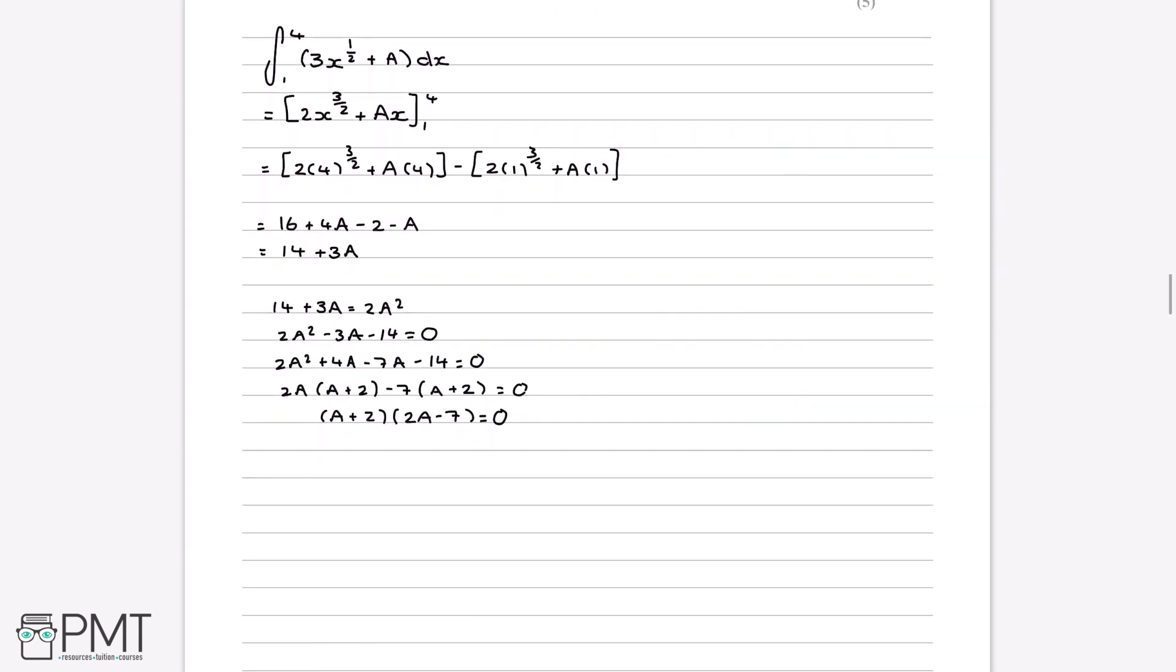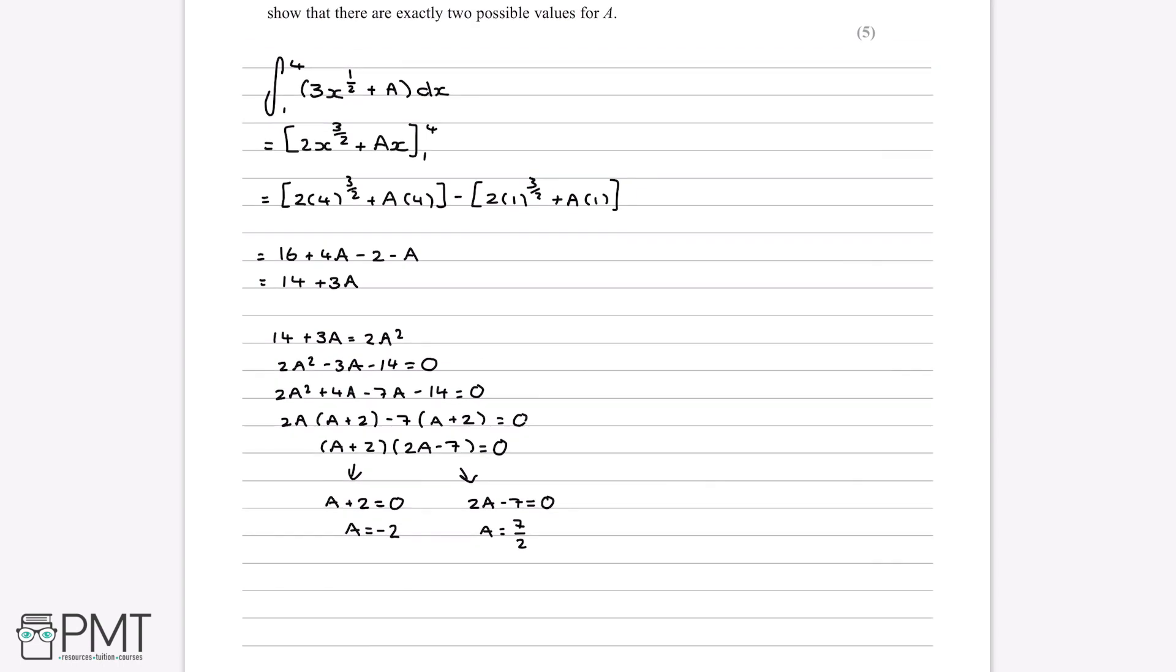And now the way that we then solve this is we say for a plus 2 equals 0. So therefore a is equal to minus 2. And for this bracket, if 2a minus 7 is equal to 0, if we add 7 to both sides and divide through by 2, a is equal to 7 over 2. And these are our two values of a that we're asked for in the question.